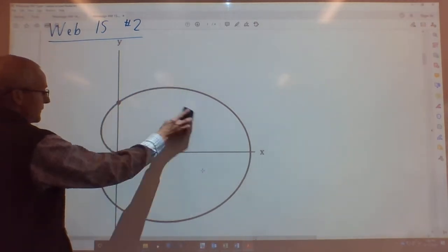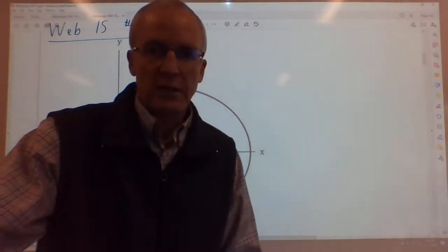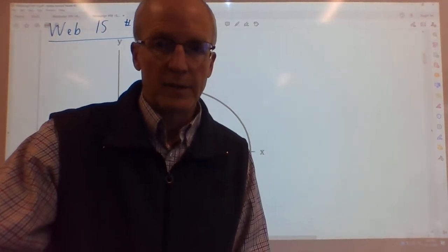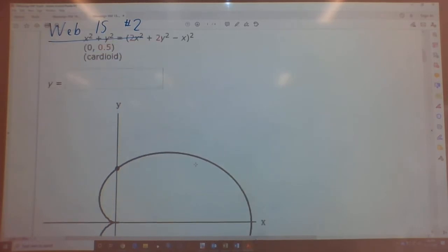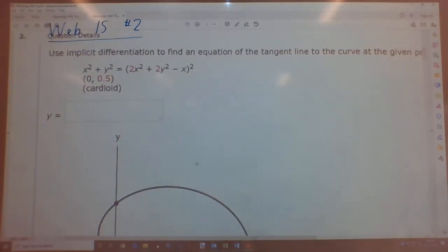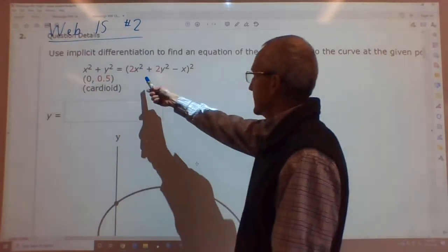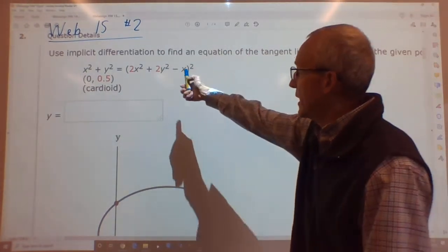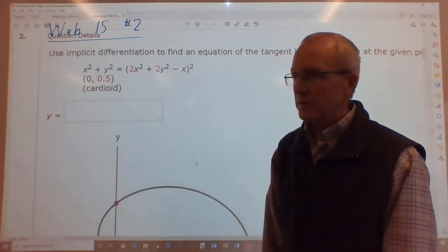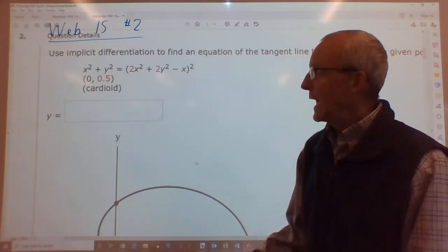So that's the goal. The equation for this thing is x² + y² = (2x² + 2y² - x)². This is a horrible thing, right? So we have to do this implicitly. There's no way you can solve for y and take the derivative explicitly. We have to do it implicitly.